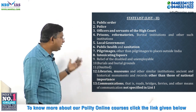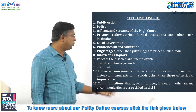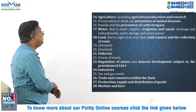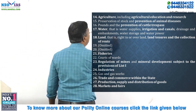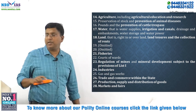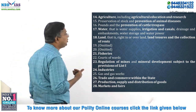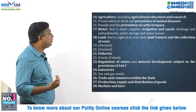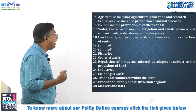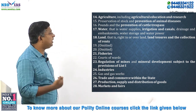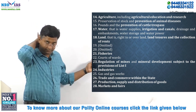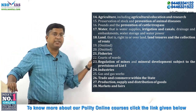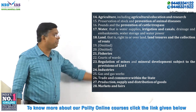Communications — that is, roads, bridges, ferries and other means of communication not specified in List 1 — come under the State List. Agriculture, including agricultural research and education, is under the State List. Preservation of stock and prevention of animal diseases, pounds and prevention of cattle trespass, water supplies, irrigation and canals, drainage and embankments, water storage, and water power — anything related to water — is under the State List. Land, rights over land, land tenures, collection of rents — all come under the State List. Fisheries within territorial waters come under the State List, while those outside territorial waters come under the Union List. Courts of wards — which protect the inheritance of minors when a person dies and the heir is under 18 — also come under the State List.